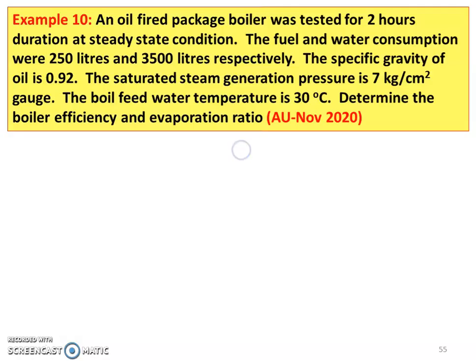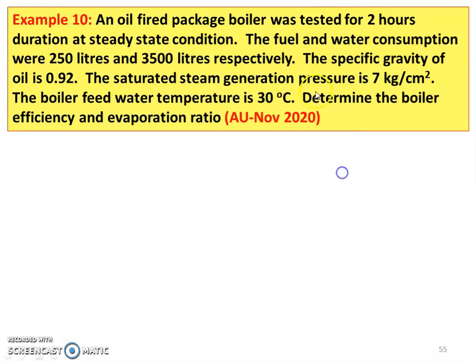We will take a few questions from the recent university question paper and solve the problems. Next example, from the November 2020 question paper: an oil-fired package boiler was tested for 2 hours duration at steady-state condition. The fuel and water consumption were 250 liters and 3500 liters respectively. The specific gravity of oil is 0.92. The saturated steam generation pressure is 7 kilograms per centimeter square. The boiler feed water temperature is 30 degrees Celsius. Determine the boiler efficiency and evaporation rate.